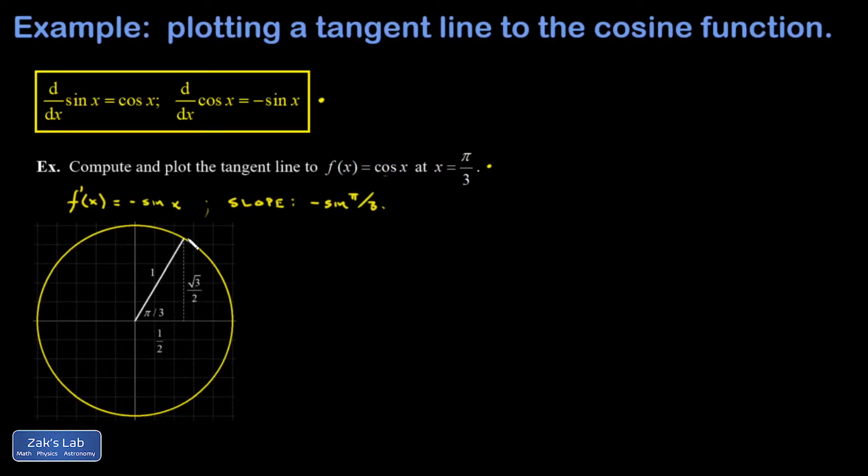So the sine is the y-coordinate of this point on the unit circle, and that's root 3 over 2. So I end up with a slope of negative root 3 over 2.